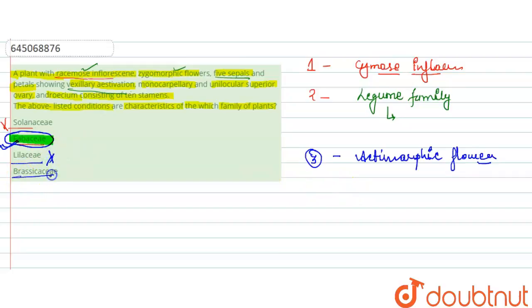Next is Brassicaceae. If we talk about the Brassicaceae, here also they show actinomorphic type of flowering. So this is again an incorrect option. The right answer here is option B. Thank you.